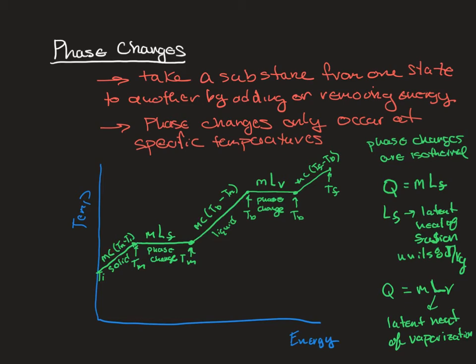So you have to keep track of what phase you're in to use the correct specific heat, and also where your phase changes occur based on temperature. In your course's Blackboard left-hand menu, you'll find a table of latent heats — latent heat of fusion and latent heat of vaporization for different substances — as well as the melting and boiling points.